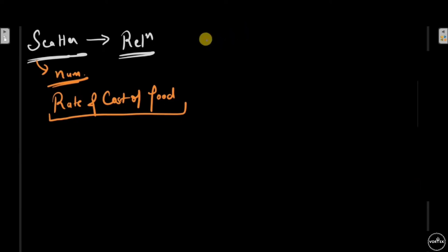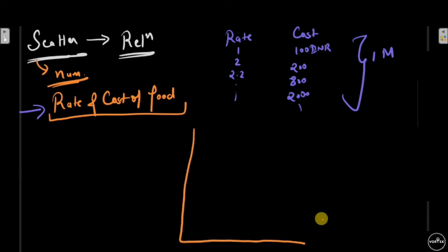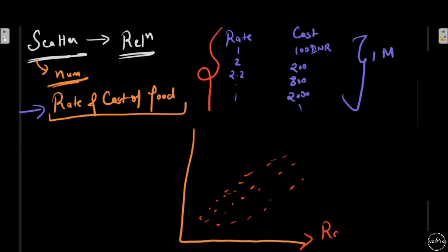In the 'rate' column I have values like 1, 2, 2.2, and so on. The cost of food is 100 INR, 200 INR, 800, 2000, and so on. Let's say I have 1 million entries. On the x-axis of the scatter chart we have all the ratings, and on the y-axis we have the cost of food — 100, 200, and so on.